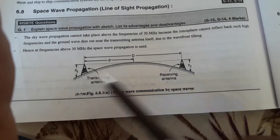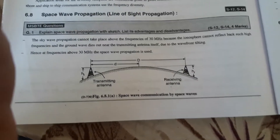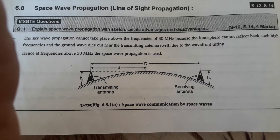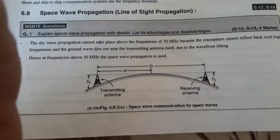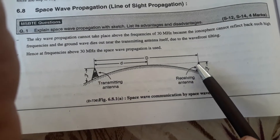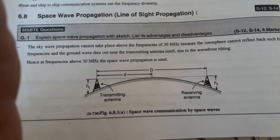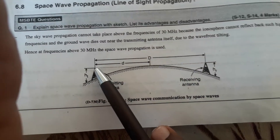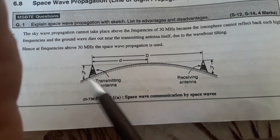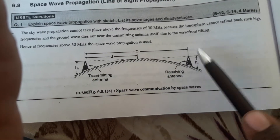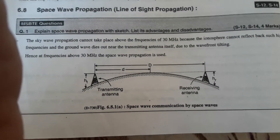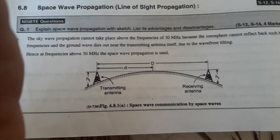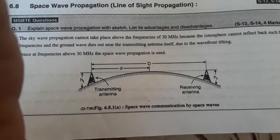Ht is the height of the transmitting antenna and Hr is the height of the receiving antenna. The space wave propagation takes place by space waves or direct waves. These are nothing but the direct waves which we have transmitted. These waves travel in a straight line directly from the transmitting antenna to the receiving antenna. The direct or space waves are not refracted like sky waves, nor do they follow the curvature of the earth like a ground wave.